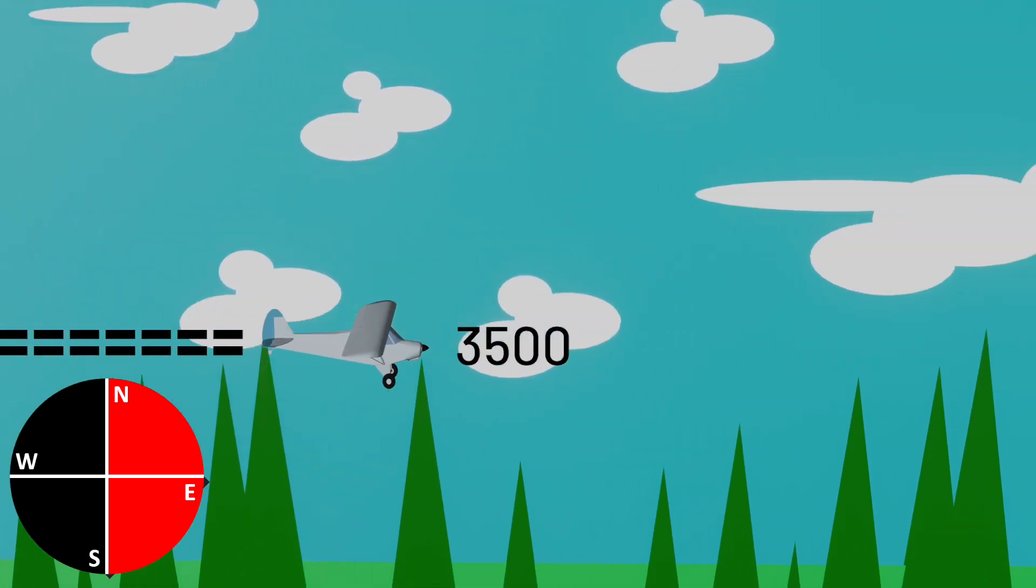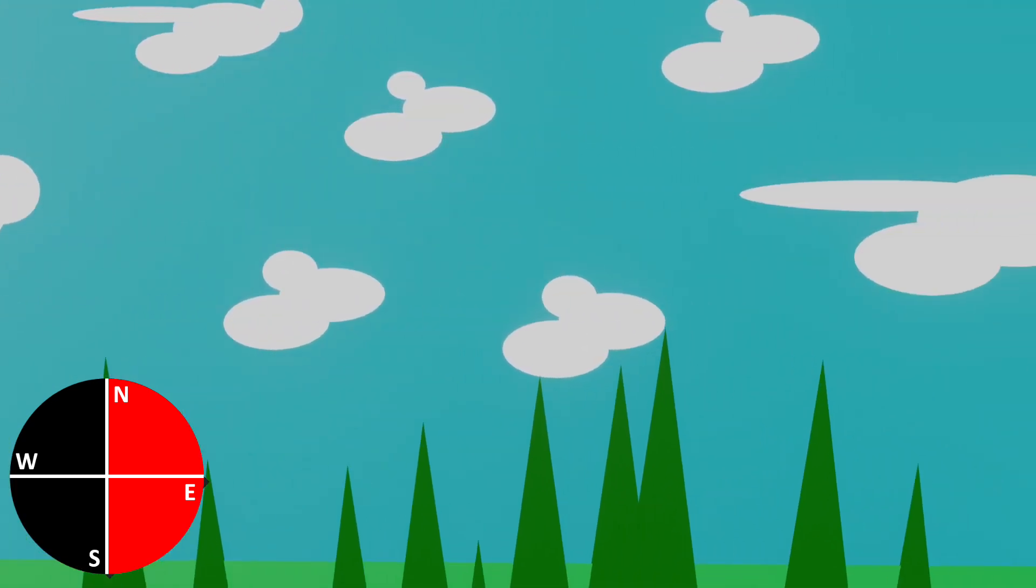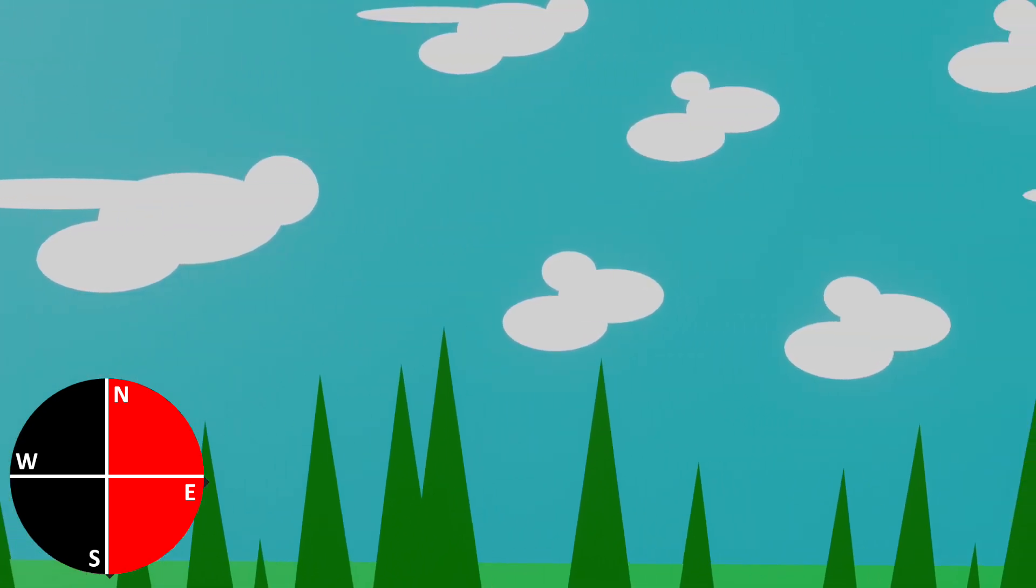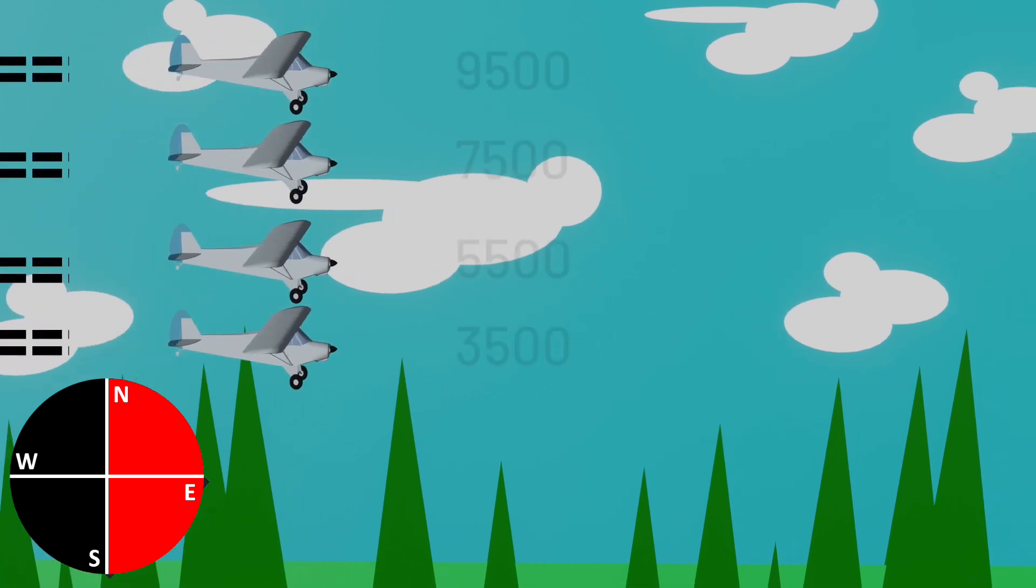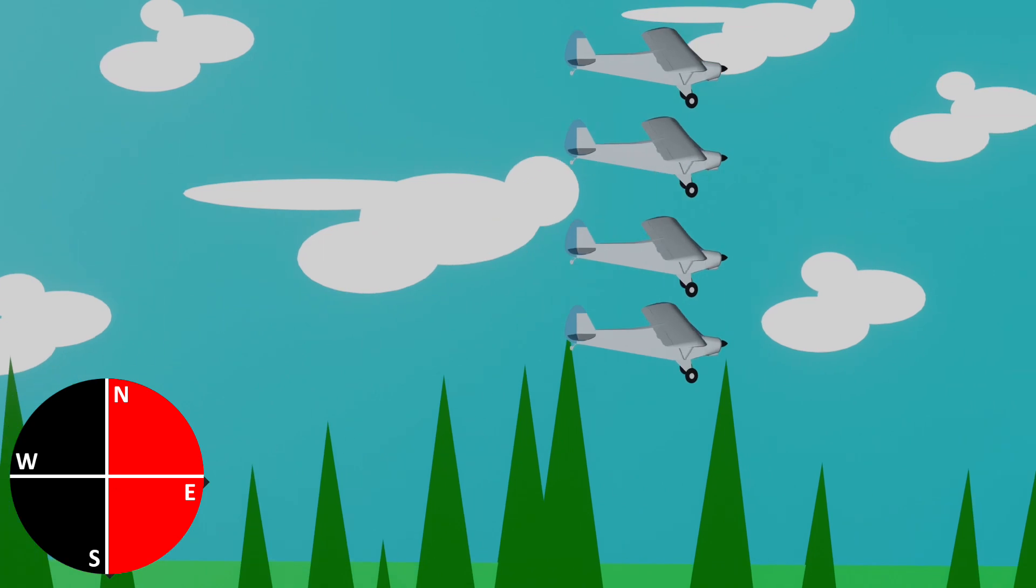Now again, this is on an easterly magnetic course, so that would be between 0 degrees and 179 degrees of magnetic course, only in cruise flight and only when you're 3,000 feet above ground level. This is for VFR Hemispherical Rule.